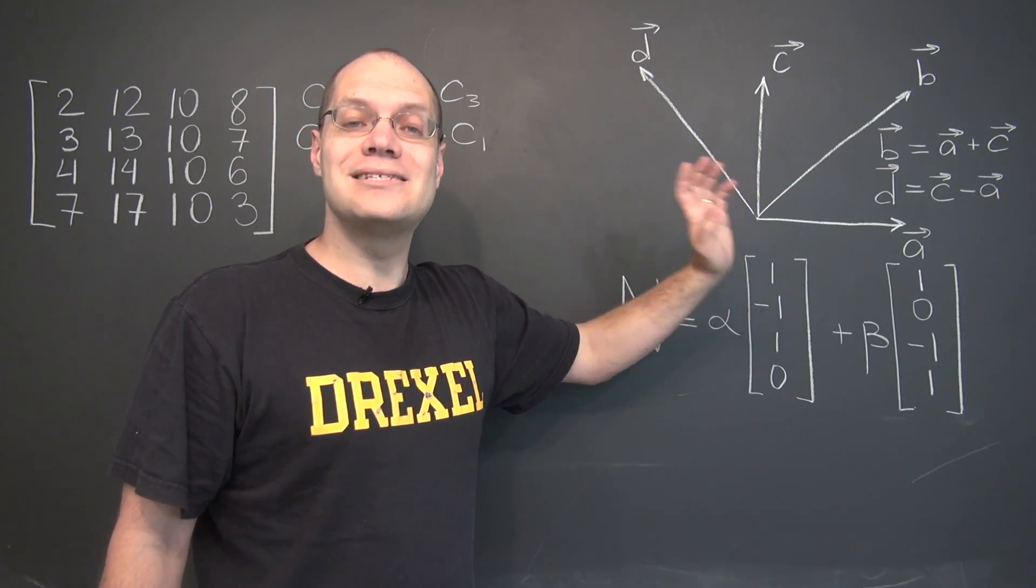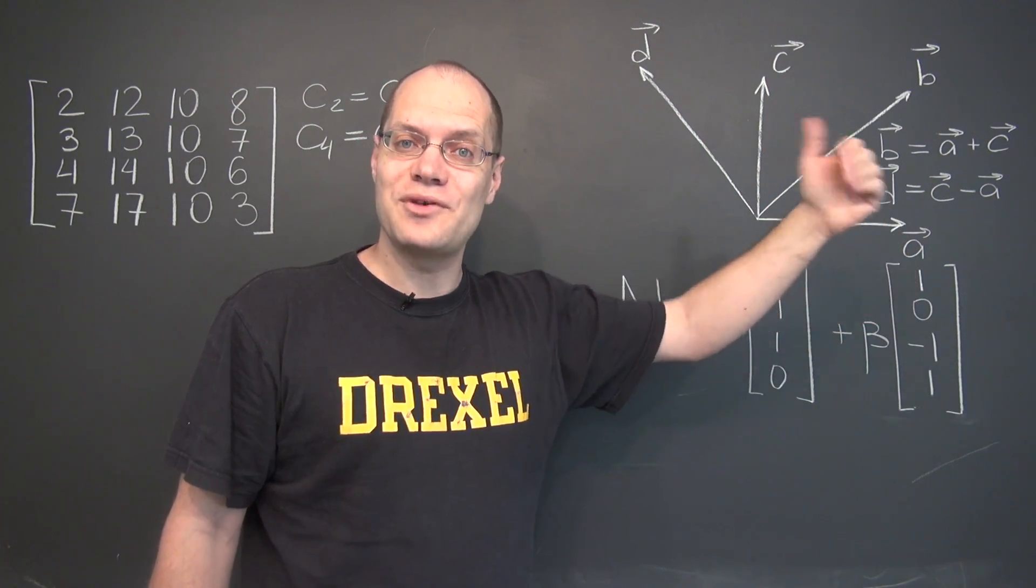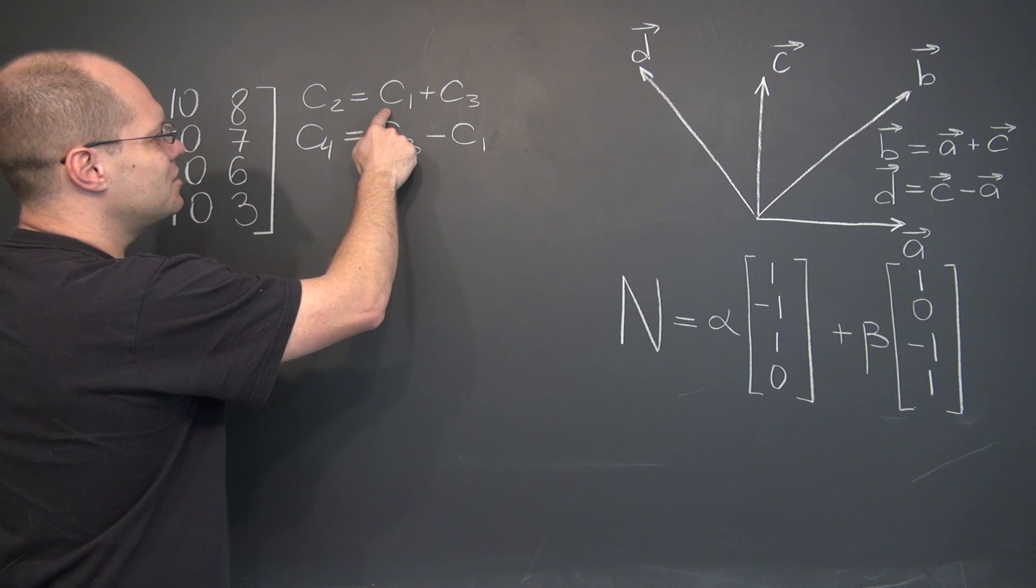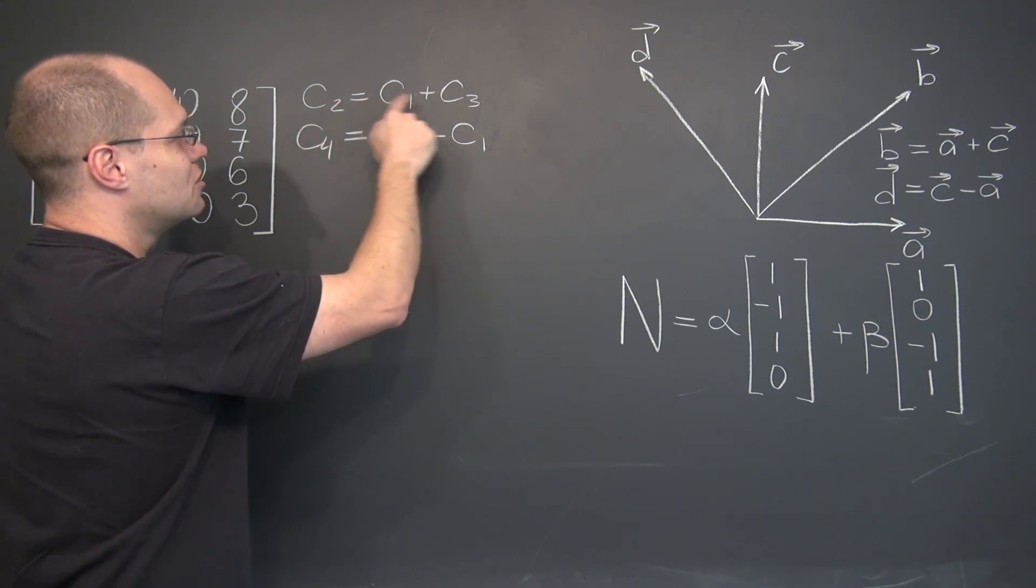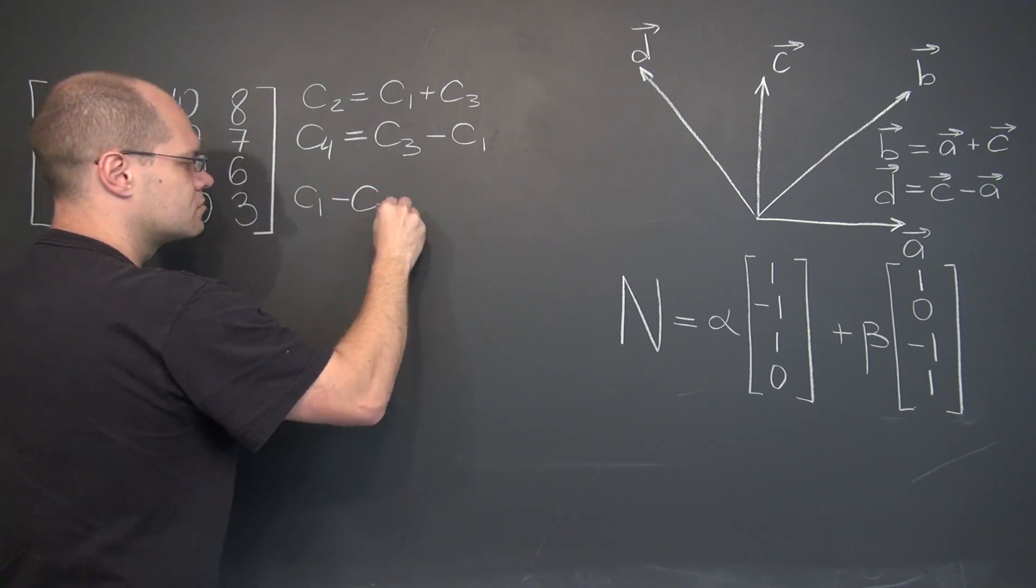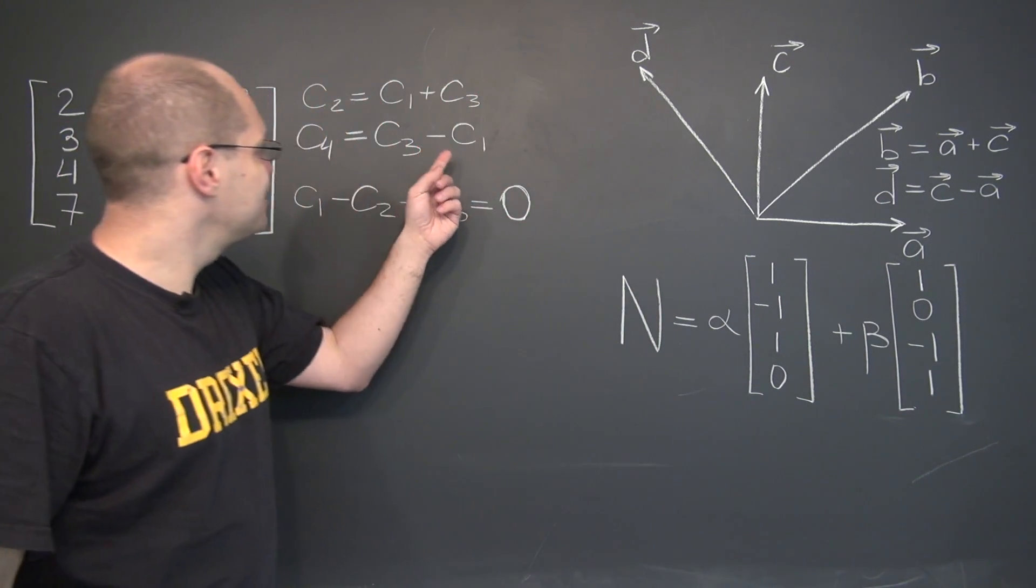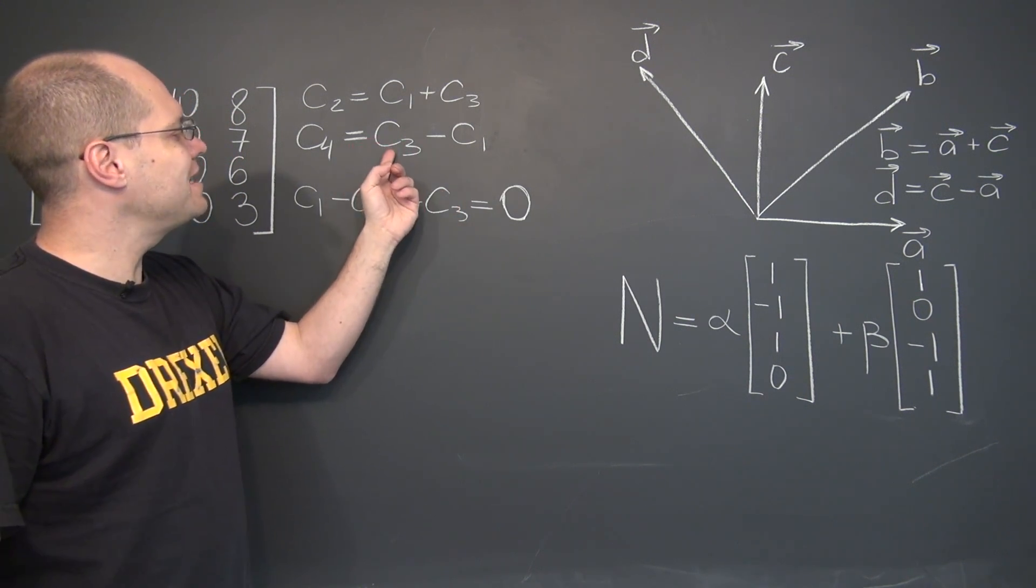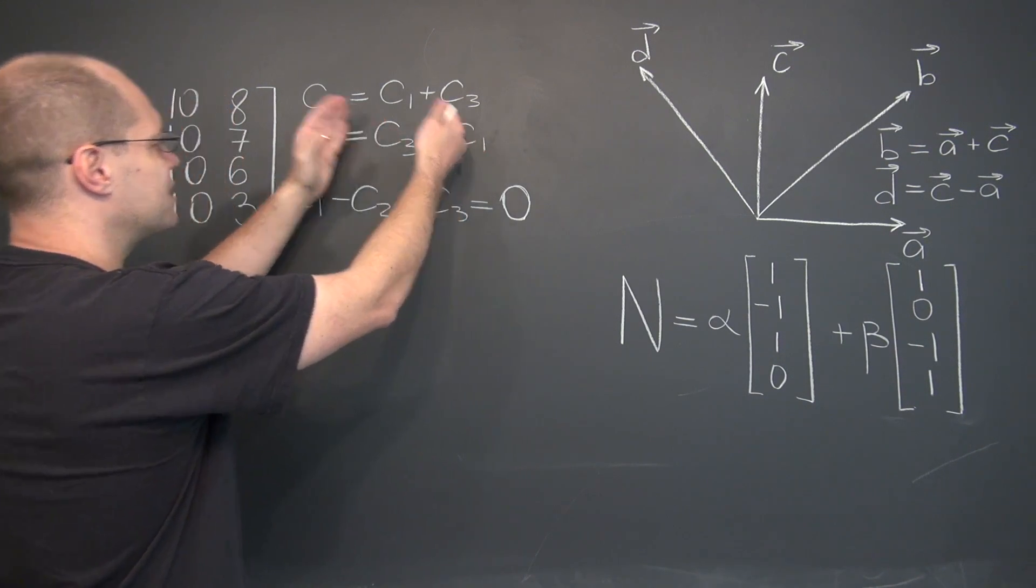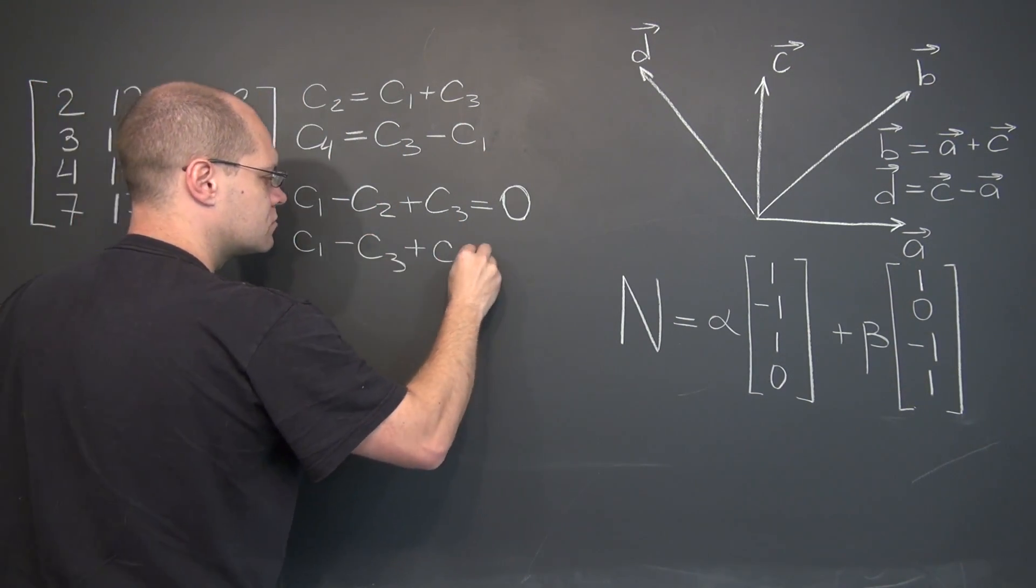We rewrite them as linear combinations that equals zero. I will actually just say it without writing it. For this one, why don't I write it? C1 minus C2 plus C3 equals zero. And from the second one, C1, no C2, minus C3 plus C4 equals zero. In my mind, I brought these two vectors over to the left hand side. Okay, and now the final step.